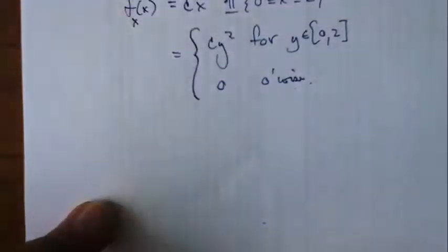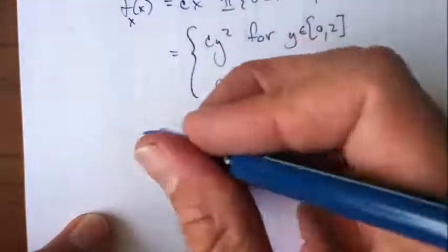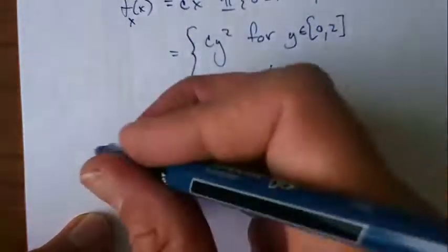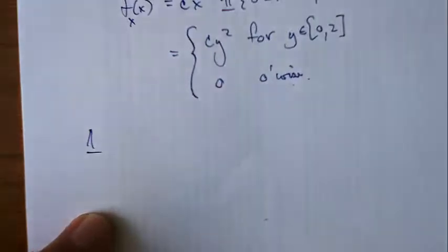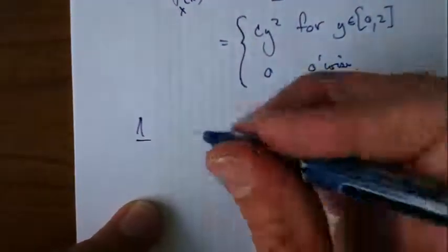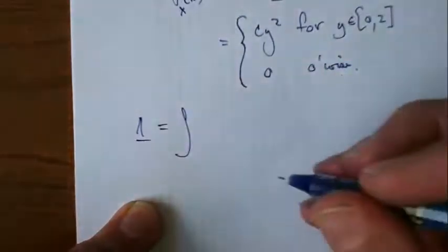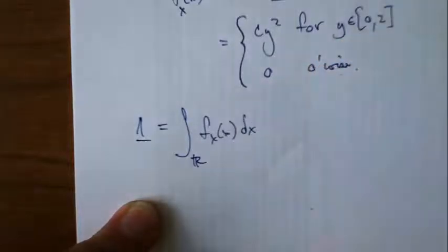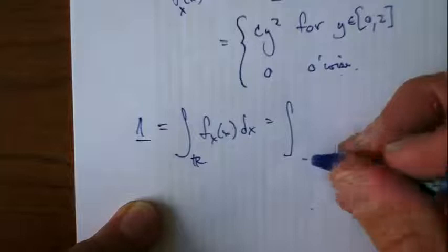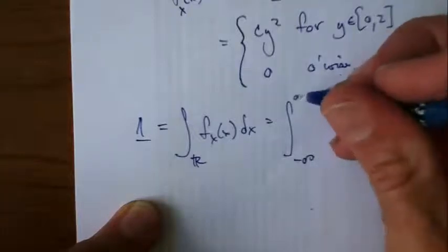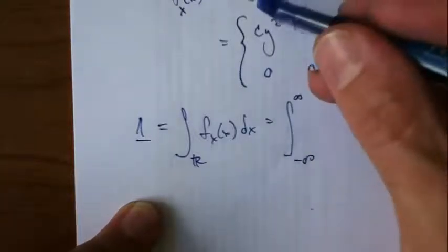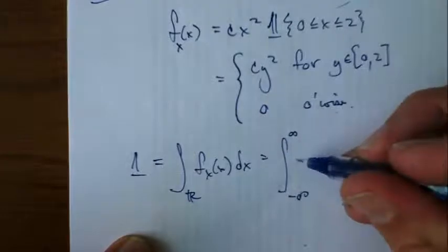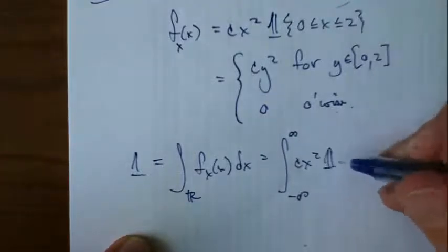One of the properties that we have here is that the integral of this thing over the entire real line has to be 1. That is, if I integrate f sub x of x dx over the reals, I get 1. So let me just put that in there, negative infinity to infinity. And I'm just going to substitute in all of this stuff with the indicator function and everything right there.